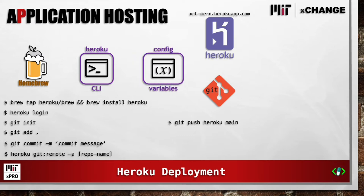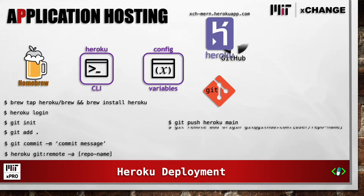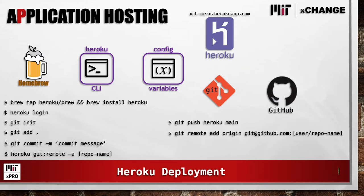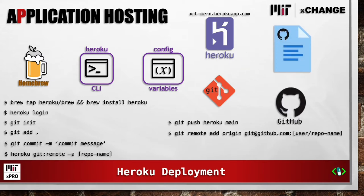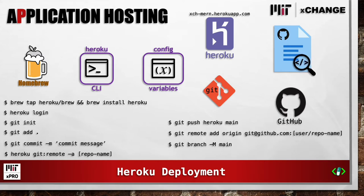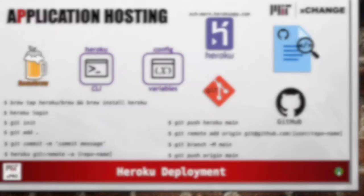We also wanted the source code and README to be easily available for review. So we added a GitHub remote repository, created a main branch, then did a Git push to origin main.